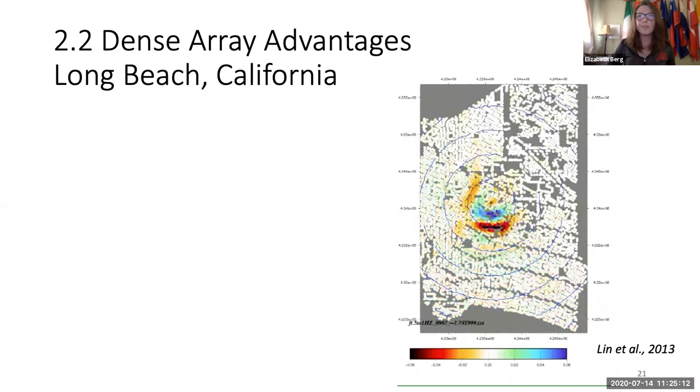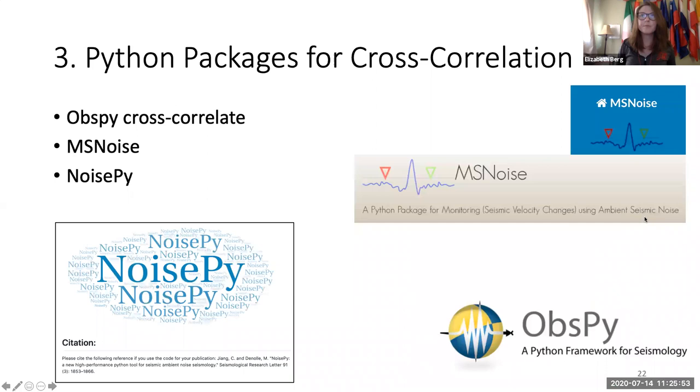I also want to mention that there are some beautiful advantages to using a dense nodal array. This is a very dense array in Long Beach. Fanchi Lin in 2013 published one of the initial papers showing cross-correlation application to this data set. There have been a lot of papers since then that have worked on using machine learning with this, trying to retrieve body waves, et cetera. It's really beautiful what the raw cross-correlations can show you about what the source distribution looks like, what the wave pattern looks like, the different nuances to that pattern.